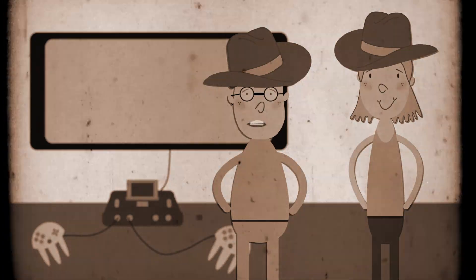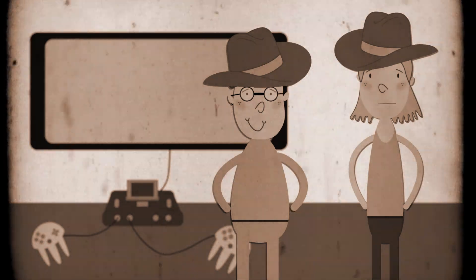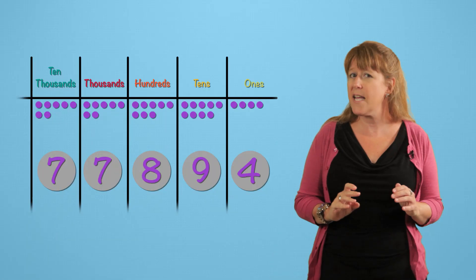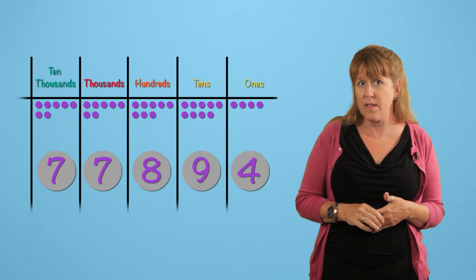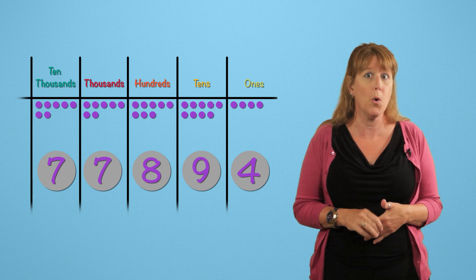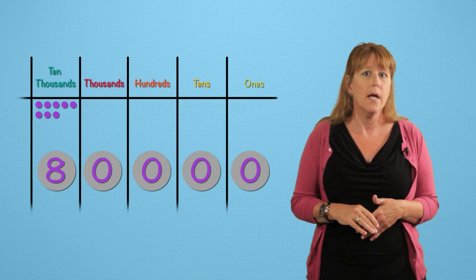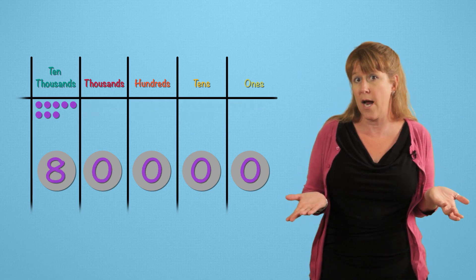I reckon I got about 80,000 points. 80,000 points, I do declare. See, I rounded 77,894 to 80,000. So what place value did I round to?